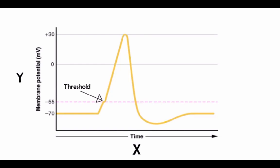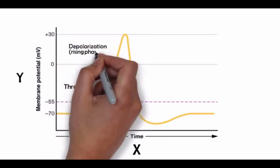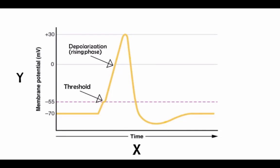When threshold is reached, a large number of sodium channels open, allowing positively charged sodium ions into the cell. This causes massive depolarization of the neuron as the membrane potential reaches zero and then becomes positive. This is known as the rising phase of the action potential. The influx of positive ions creates the electrical signal known as the action potential, which then travels down the neuron.